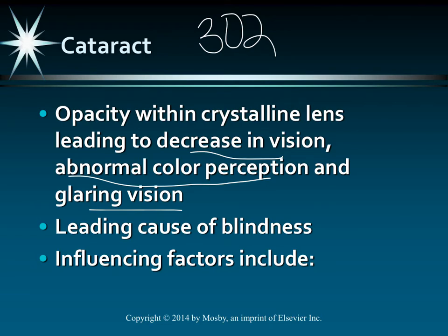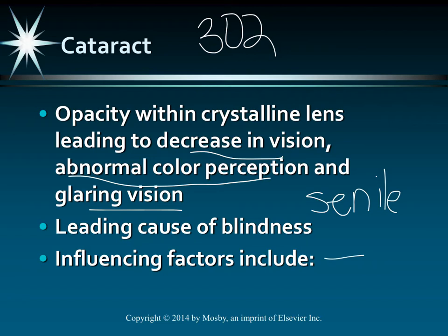Most cataracts are senile-related, meaning associated with aging. Other contributing factors include UV light exposure — so wear your sunglasses — maternal rubella, certain drugs especially corticosteroids, and anything that causes ocular inflammation. People with diabetes also tend to develop cataracts at a younger age. Wearing sunglasses and teaching children to wear them is important prevention.